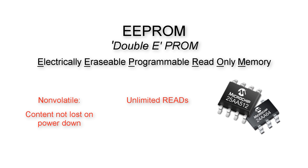About 99% of double EEPROMs today have a serial interface, with I2C and SPI interfaces being the most likely. Once the content is in the memory, reading happens as fast as the serial clock speed runs, and you can read the memory content forever without damaging the part.